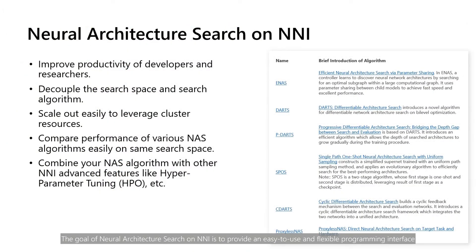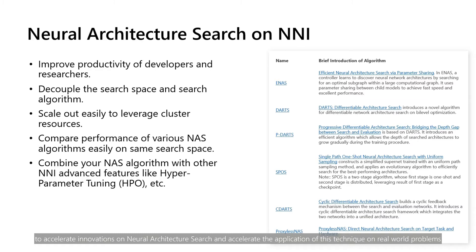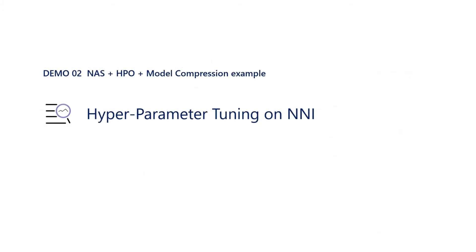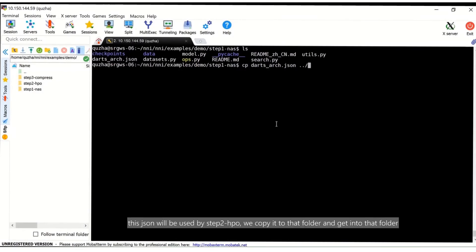The goal of neural architecture search on NNI is to provide an easy-to-use and flexible programming interface to accelerate innovations in neural architecture search and accelerate the application of this technique to real-world problems. NNI has supported many popular neural architecture search algorithms, and users can easily apply these algorithms to their own tasks and customize new ones. This JSON file will be used by step two — HPO. We copy it to that folder and navigate into it.